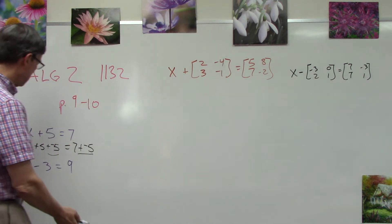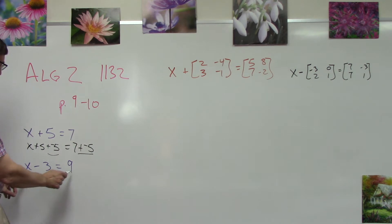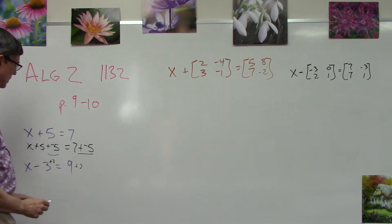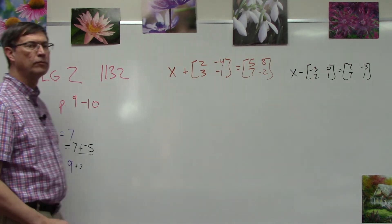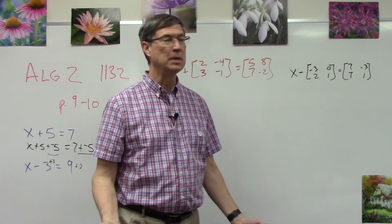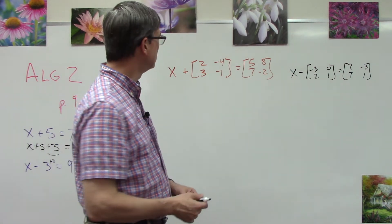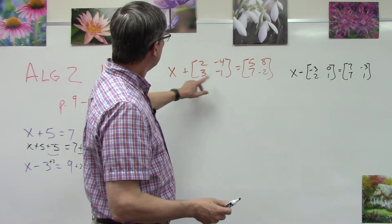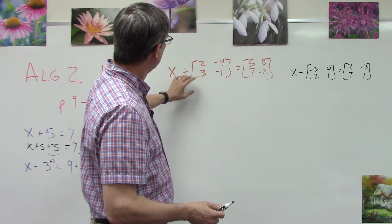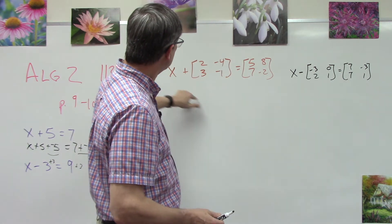Here, x - 3 = 9. We would add 3 to undo the minus 3, add 3 to both sides, and then x = 12. All right, that part is easy. Let's talk about how we apply that to matrices.